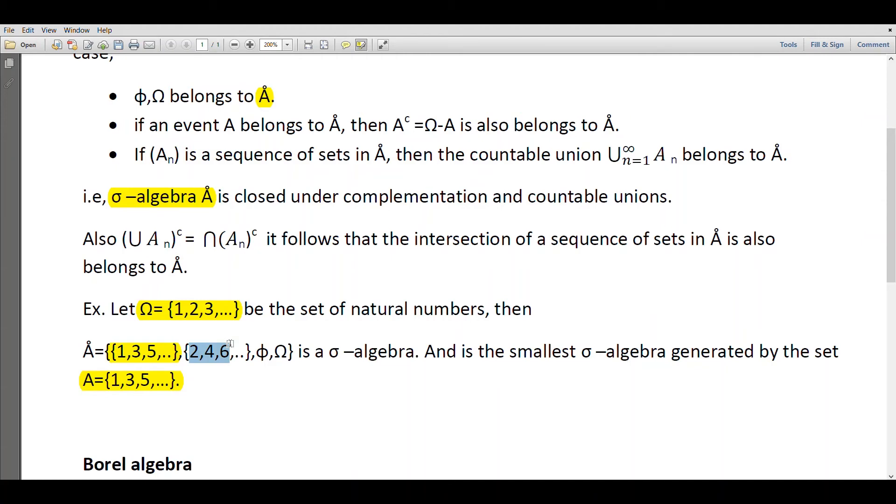which is Ω - A = {2,4,6,...} (the even numbers), the intersection of these two events which is φ (the null set), and their union which equals the sample space Ω.